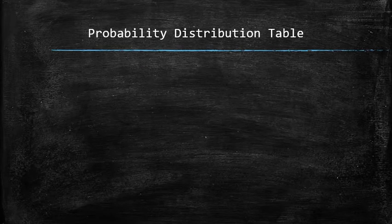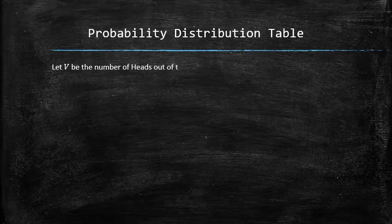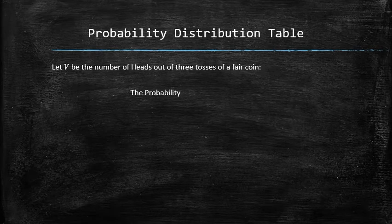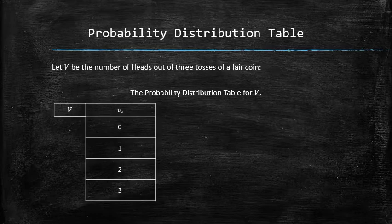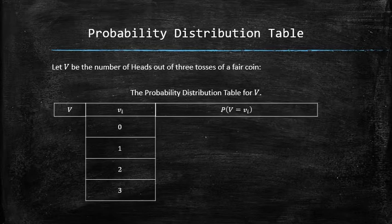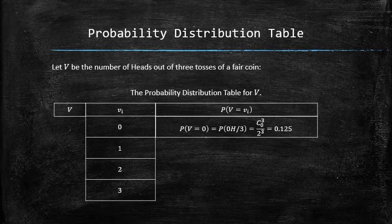Let's increase the number of tosses and consider the following example: let v be the number of heads out of three tosses of a fair coin. To construct the probability distribution table for v, we list all possible outcomes along with their probabilities side by side in the form of a table. Again, the probability of each outcome has to be computed. The probability that v equals 0 is the same as the probability of getting 0 heads among three tosses, which we compute using the formula from one of the previous sections, and is equal to 0.125.